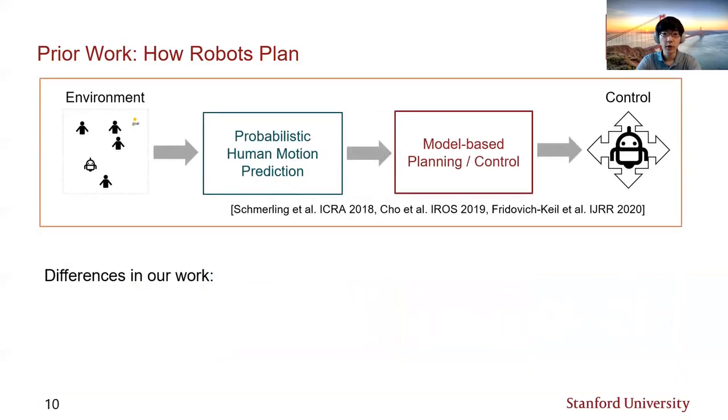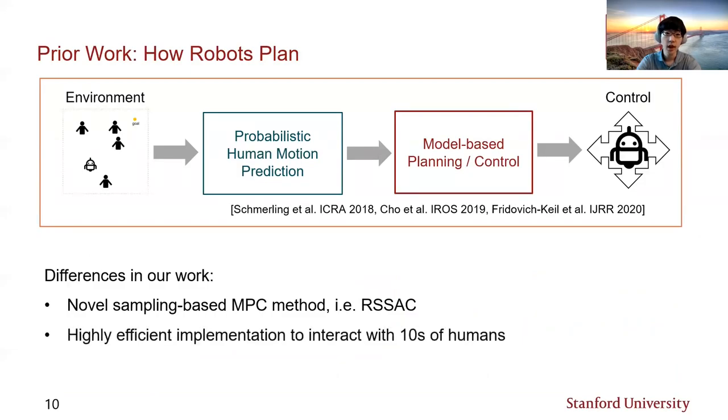However, our framework is different from prior work in that the controller we propose is a novel sampling-based stochastic MPC. This high-performance and highly efficient algorithm allows the robot to interact with tens of humans jointly in real-time, which is quite challenging for a model-based approach. We also note that unlike prior work, the control algorithm takes into account the risk of collision by solving risk-sensitive optimal control, which we'll review in the next couple of slides.